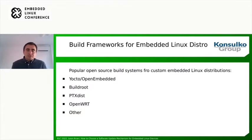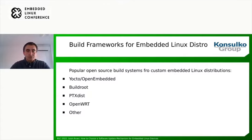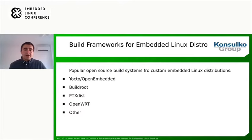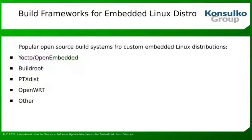What are the build system options out there? Here is a list of popular open source build systems for custom embedded Linux distributions. We start with the Yocto project and OpenEmbedded — my preferred choice and what I use daily. Buildroot is another excellent build system, and I have upstream contributions there as well. PDX is an alternative. OpenWRT is designed primarily for wireless routers but can be adjusted for embedded devices as well. And there are other options on the market too.